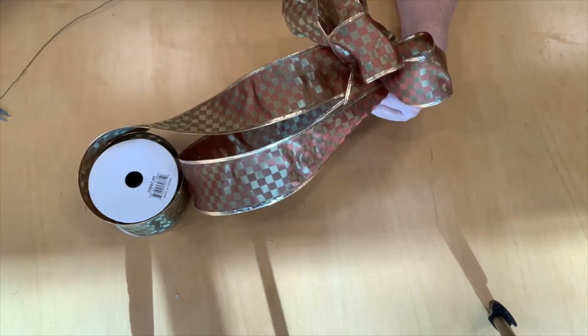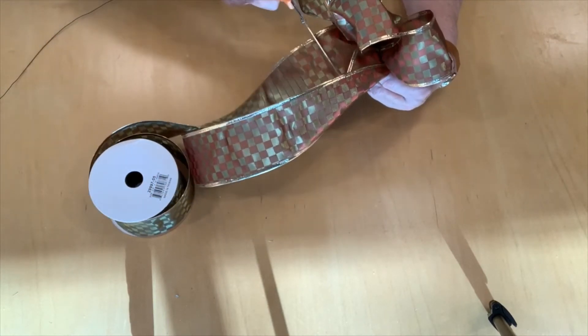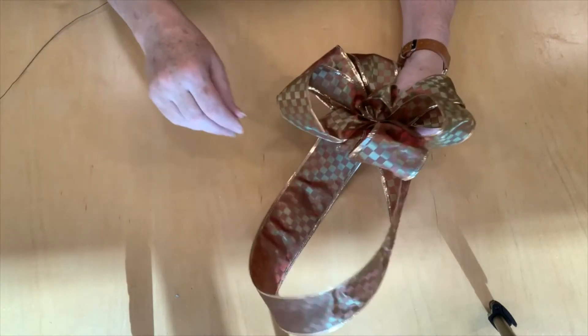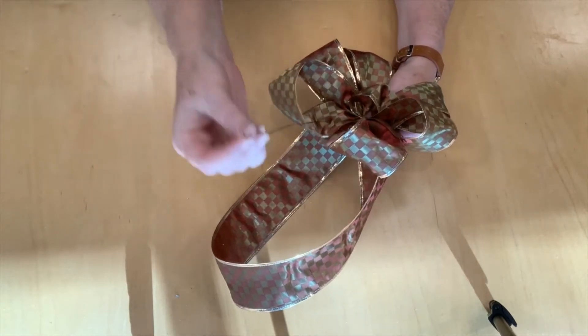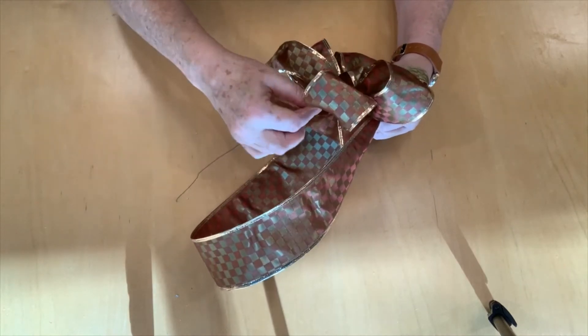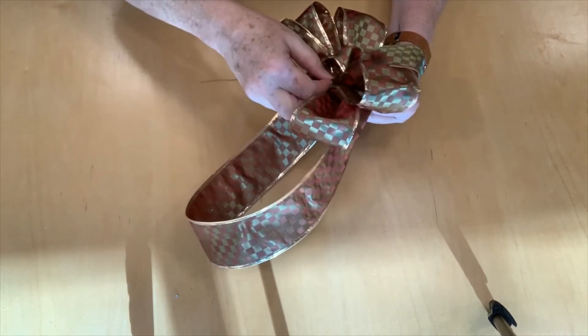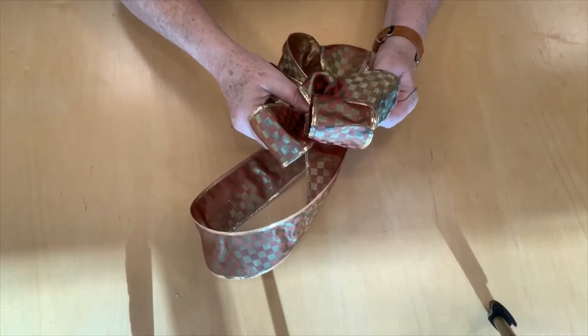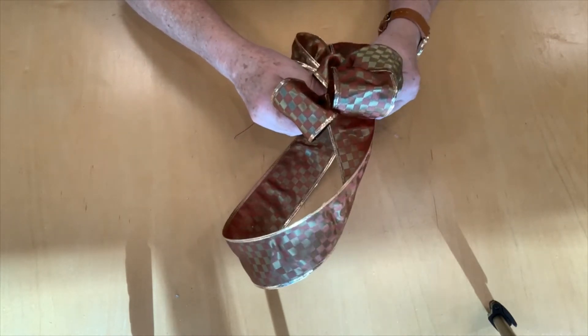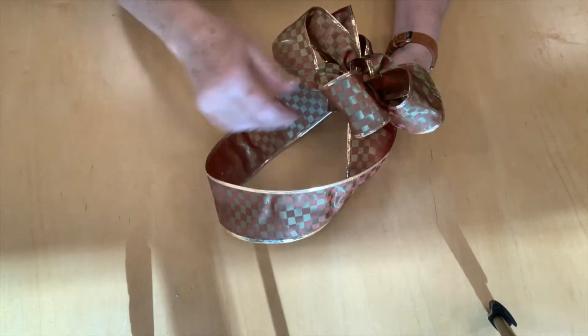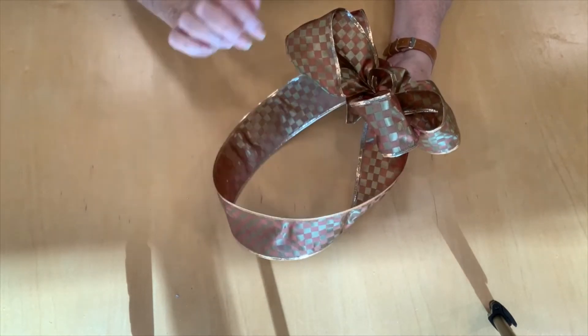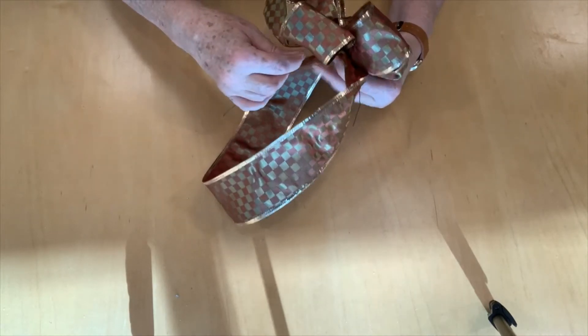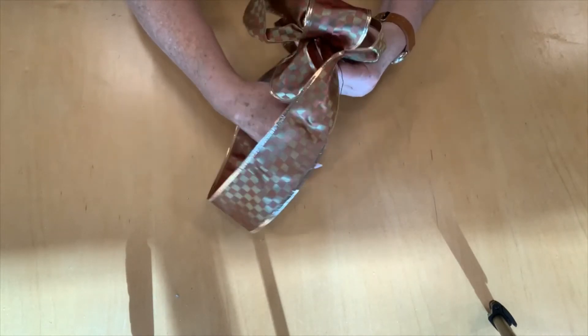So now I'm ready to cut off my extra and I can get rid of this bolt here. And now I'm going to be taking my wire and poking it right through the center of the bow. I'm going to pick up all of those little pinched loops.